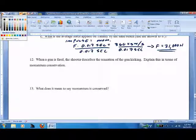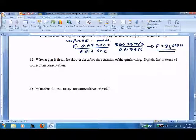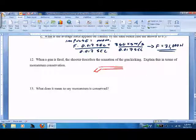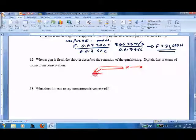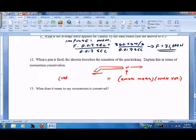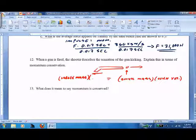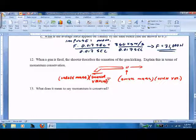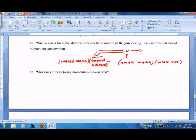When a gun is fired, the shooter describes the sensation of the gun kicking. I'll explain this in terms of momentum conservation. She's got the shotgun, she shoots a bullet out, gun's got to move back. Small mass times high velocity equals larger mass times smaller velocity. So the gun has to kick back, you have to feel it. You usually put coils in there to eat up that kickback.